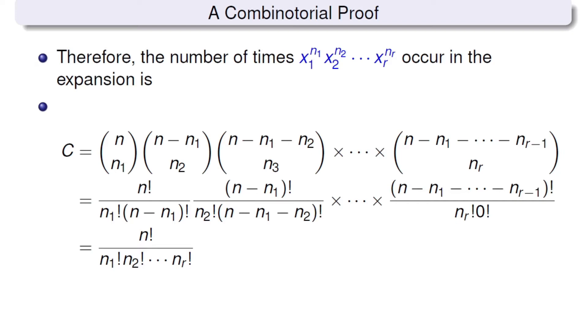So this equals, plugging in all the formulas, we have the second equation. And you can see that there is n minus n1 factorial on the bottom of the first term, but n minus n1 factorial is on the top of the second term. So they cancel out, and then cancel out.